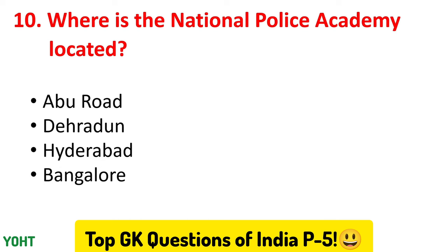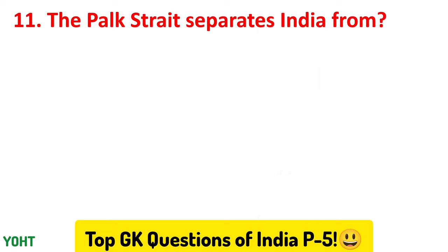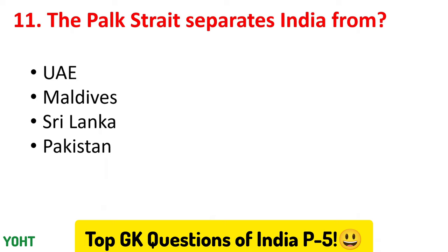Let us jump to the eleventh question. The Palk Strait separates India from — the options are UAE, Maldives, Sri Lanka, and Pakistan. The correct answer to this question is option number three, which is Sri Lanka.